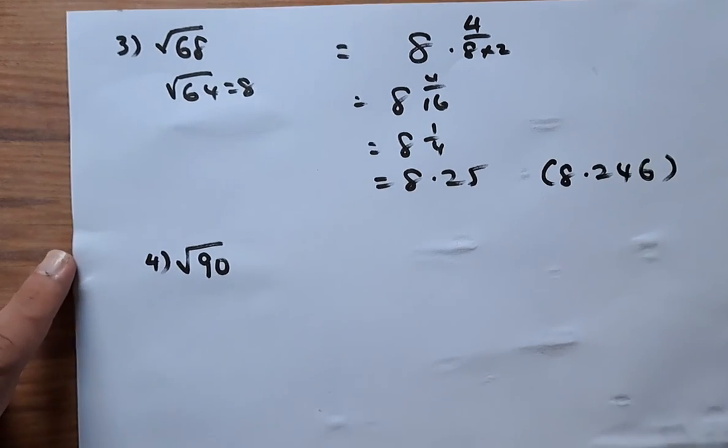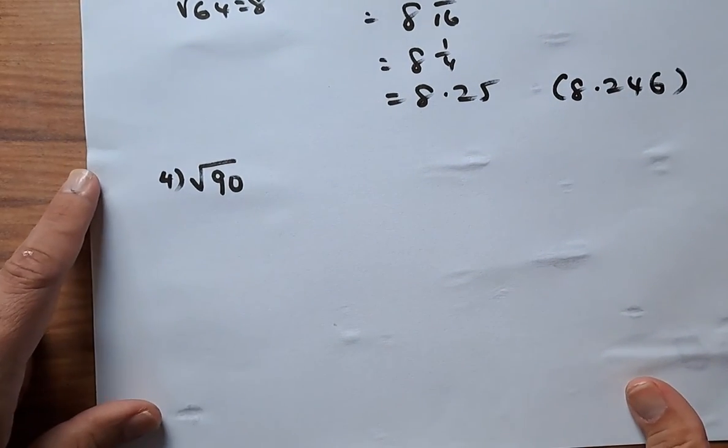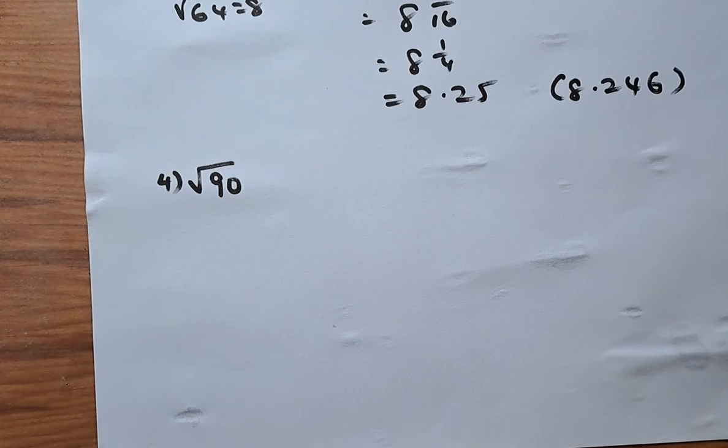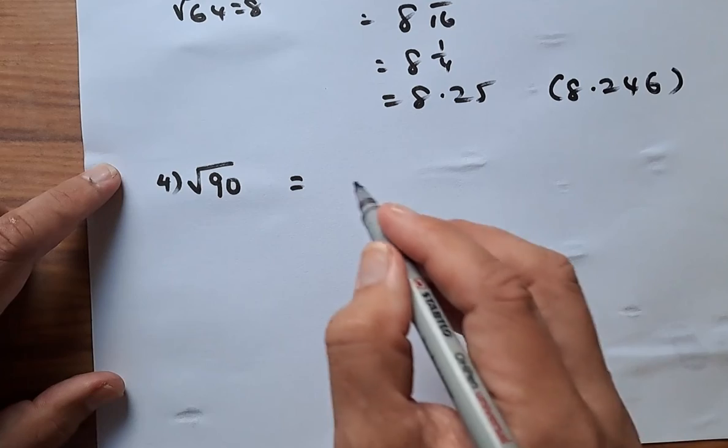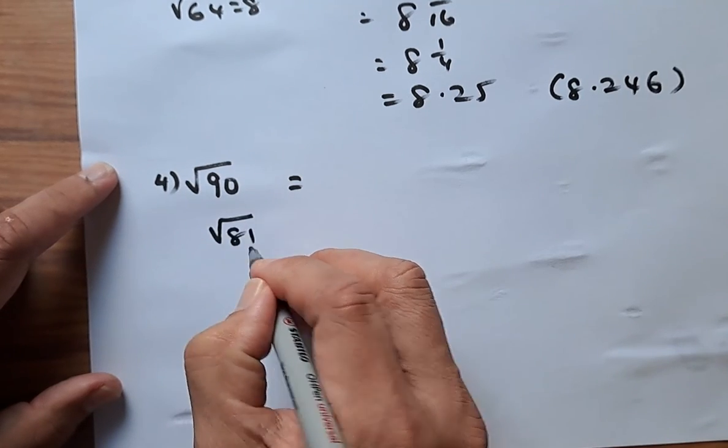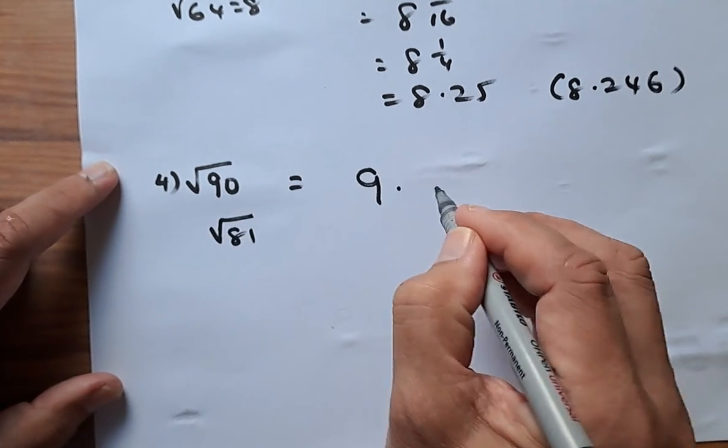So we are getting there. Last but not least, we are going to find the square root of 90. Square root of 90—again, the closest is going to be 9 because 9 squared is 81, so it's going to be 9 point a number.